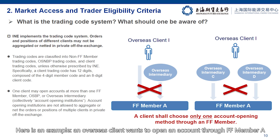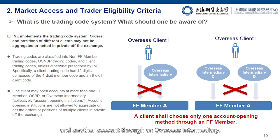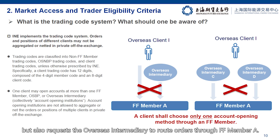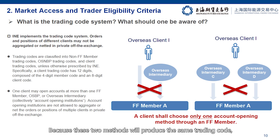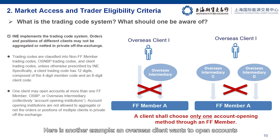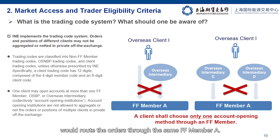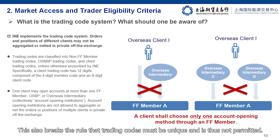Here is an example. An overseas client wants to open an account through FF member A, and another account through an overseas intermediary, but also requests the overseas intermediary to route orders through FF member A. Because these two methods will produce the same trading code, the client is not allowed to choose both.